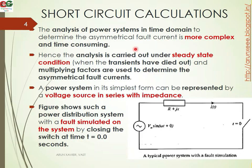Because the time domain analysis is difficult and complex, the analysis is carried out under steady state conditions — that is, when the transients have died out. Multiplying factors are then used to determine the asymmetrical fault current.